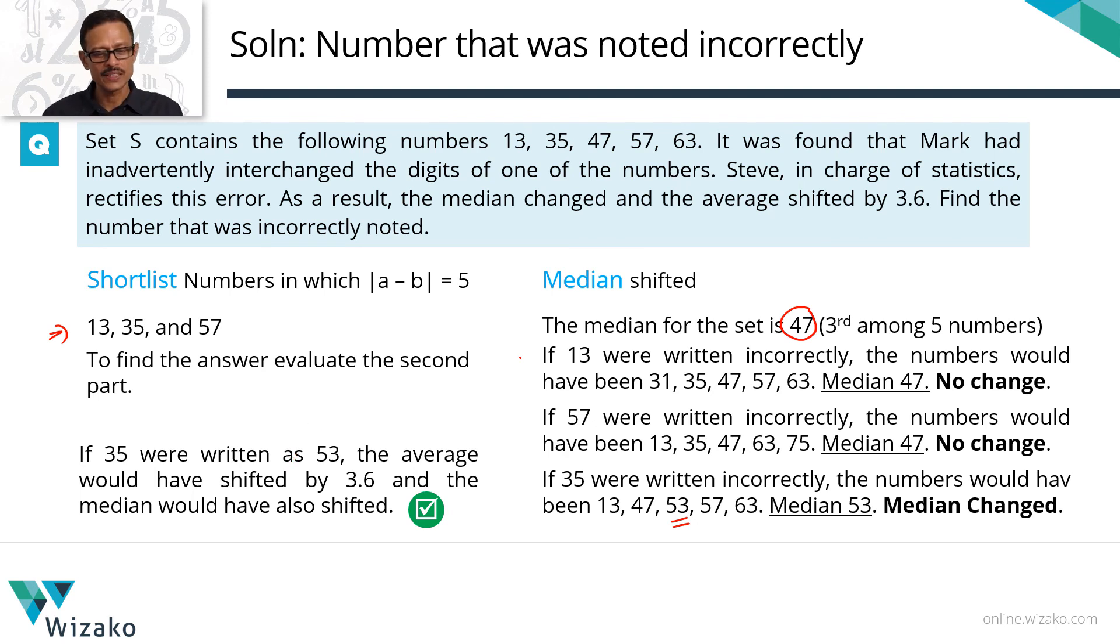Note one thing. Here I would like to point out one thing. By writing this 13 as 31, the change happened on one side of the median. Median is 47. The 31 also fell on the same side of the median, which is why the median did not change. By writing the 57 as 75, the median is 47. He wrote this 57 as 75. The shift happened on one side of the median. Therefore, the median did not change. By writing the 35 as 53, the number moved from one side of the median to the other side of the median. Therefore, the median has to change and which is why 35 is the answer.